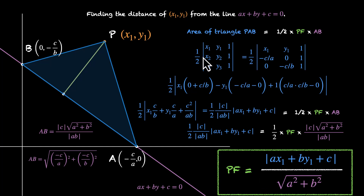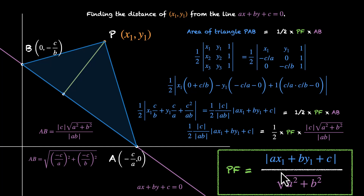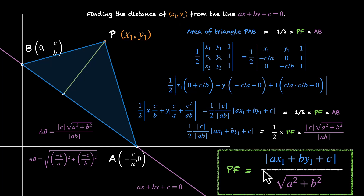And this is our magical formula — the proof for the distance between any point x1, y1 and any line ax plus by plus c equals 0. Note that this line is written in standard form with everything on the left equal to zero. The numerator is the equation of the line in standard form with x replaced by x1 and y replaced by y1. In the denominator, you have the square root of the sum of squares of the coefficients of x and y — square root of a squared plus b squared.